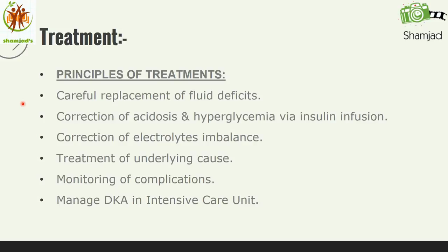The second principle is correction of acidosis and hyperglycemia via insulin infusion. Serum glucose should decrease at a rate of no faster than 100 mg per hour. It is better to avoid a rapid decline in blood sugar during insulin therapy, as it may cause other complications. Insulin therapy stops lipases and promotes the metabolism of ketone bodies. This, together with correction of dehydration, normalizes blood pH. Bicarbonate therapy should be avoided unless acidosis with pH less than 7 results in hemodynamic instability. The third principle is correction of electrolyte imbalance. As soon as urine output is restored, potassium supplement must be added to the IV, and other electrolytes corrected accordingly. If infection is present, antibiotics should be added to the line of treatment.